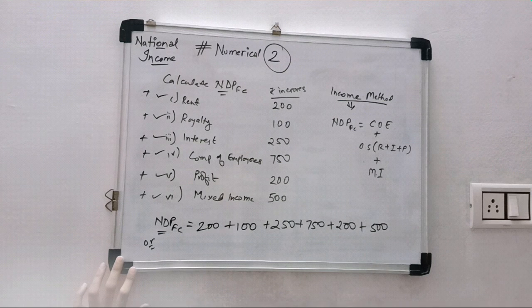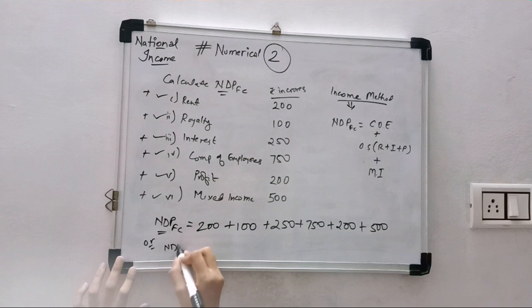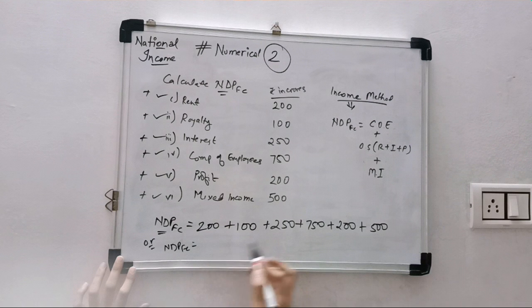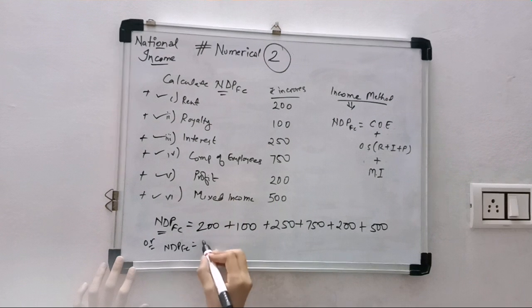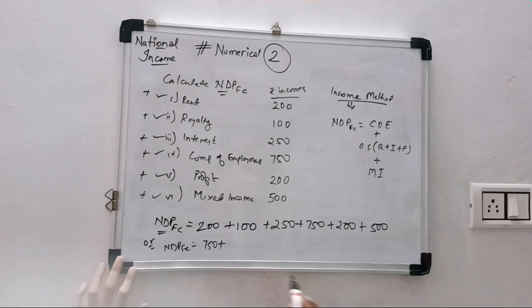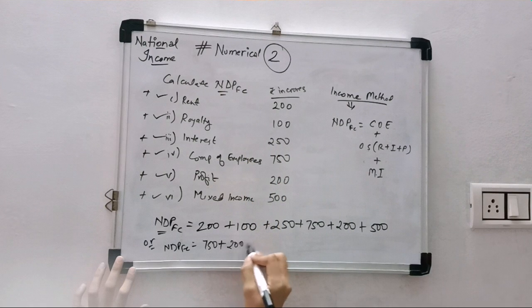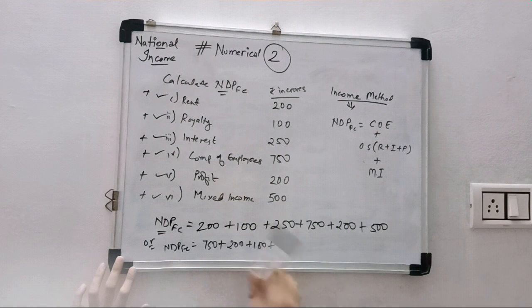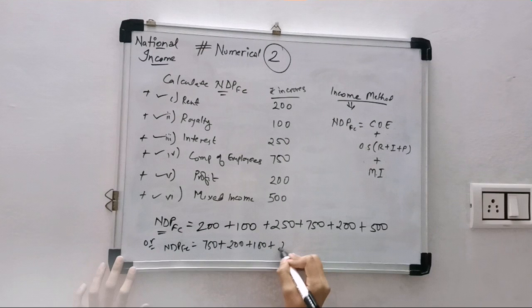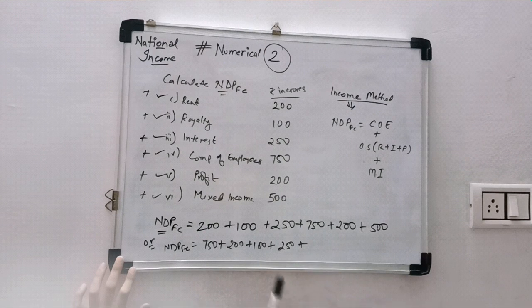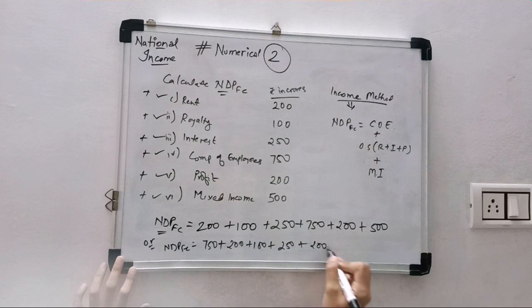Then the next step will be NDPFC equals COE that is 750, then your rent and royalty 200 and 100, then interest 250, then your profit 200.